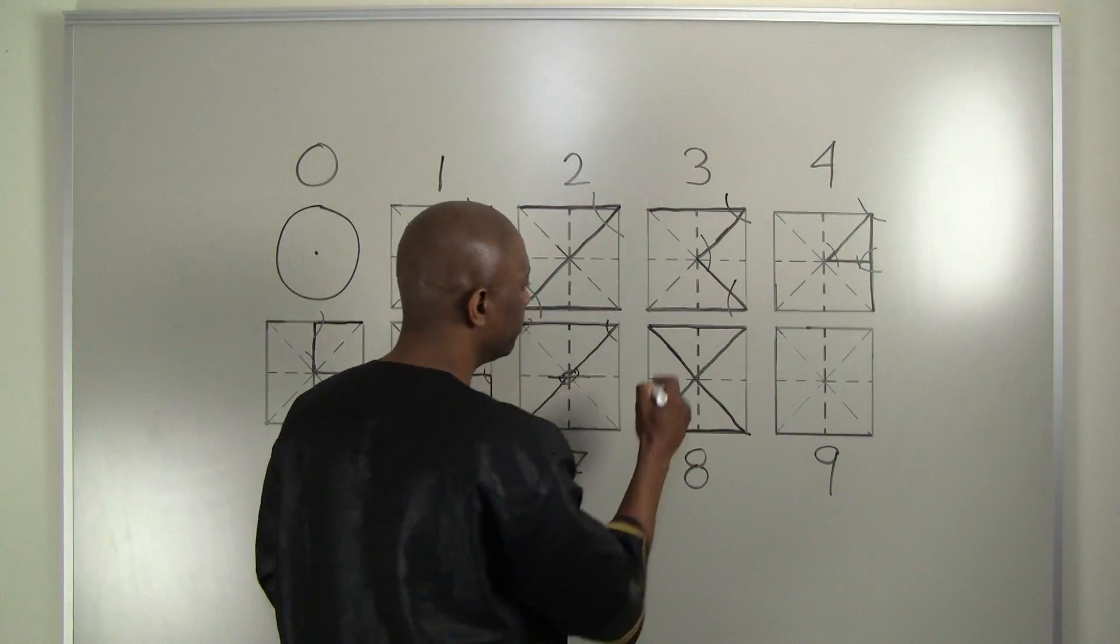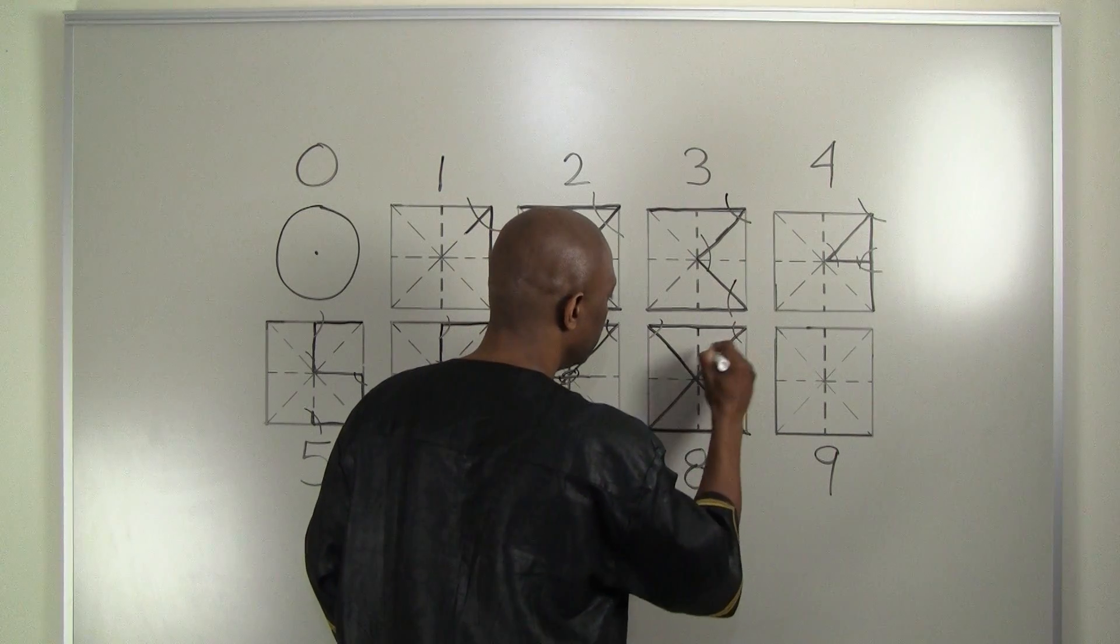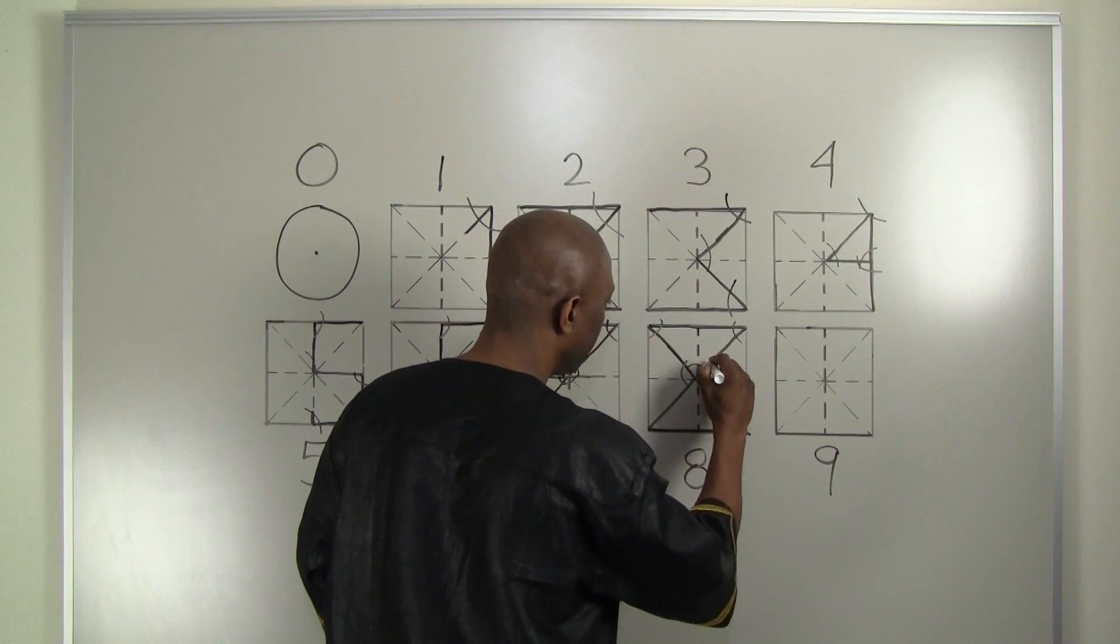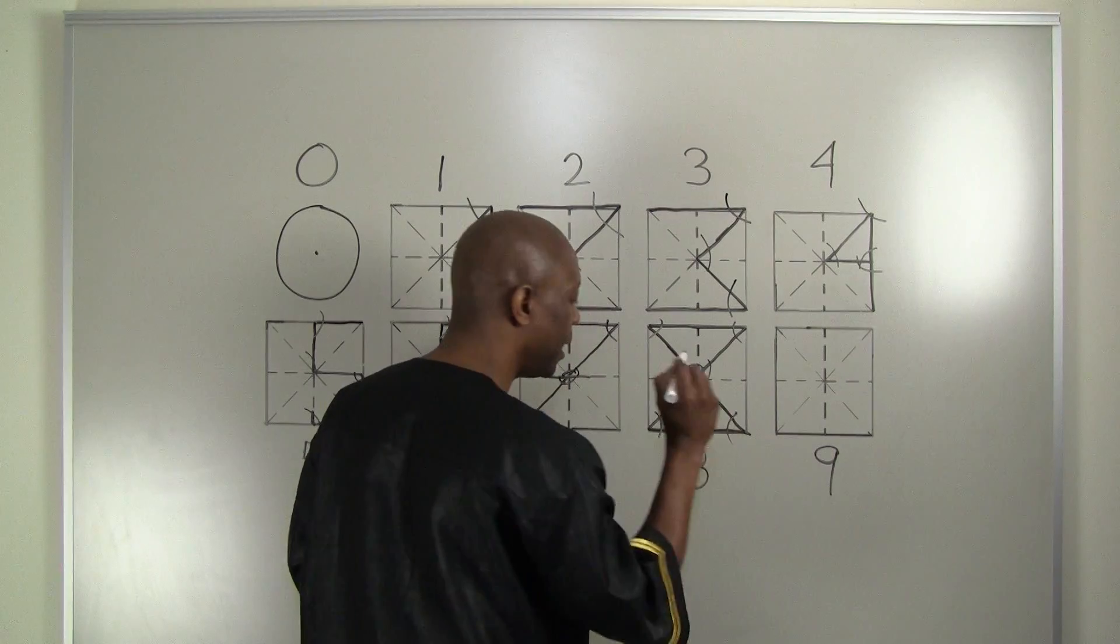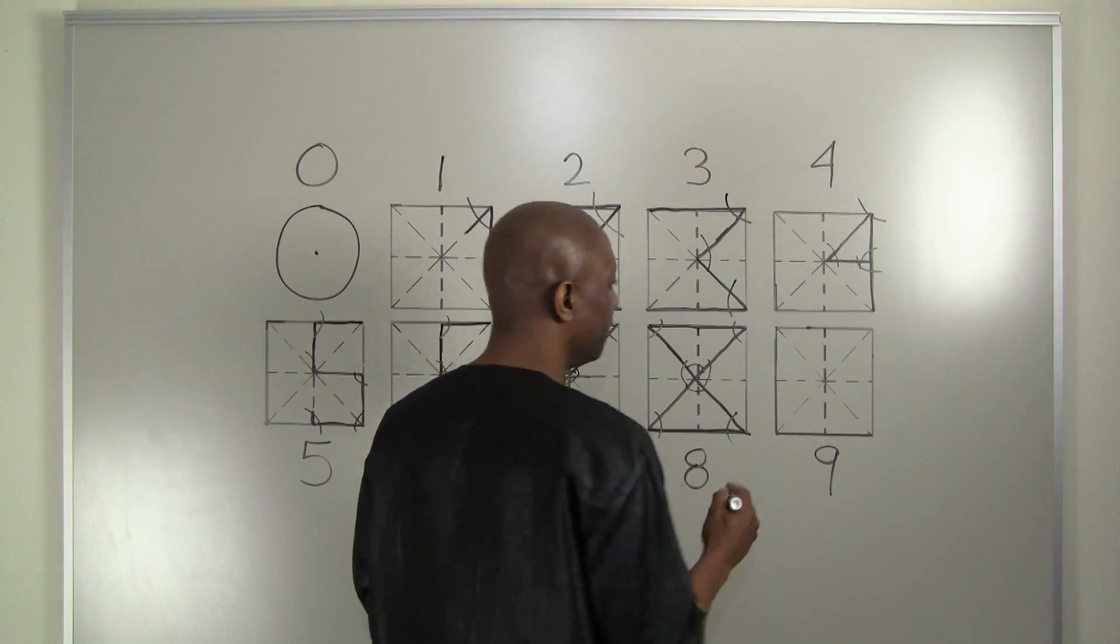The number eight comes from one, two, three, four, five, six, seven, eight angles. And finally, we have nine.